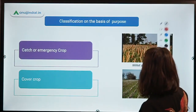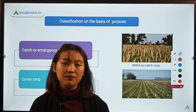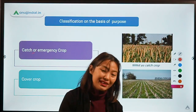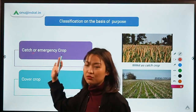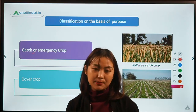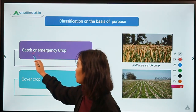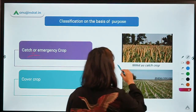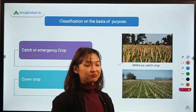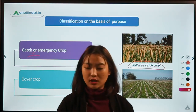The first is catch or emergency crops. As the name suggests, whenever your main crop is failing, we use or grow catch or emergency crops as a substitute. Even if your main crop has failed due to unfavorable conditions, you still have a substitute crop — the catch or emergency crop. Millet is shown here as an example, as it can be used as a substitute for crops like cotton.